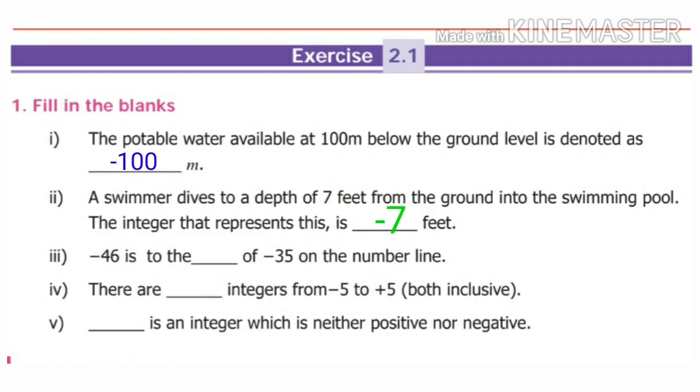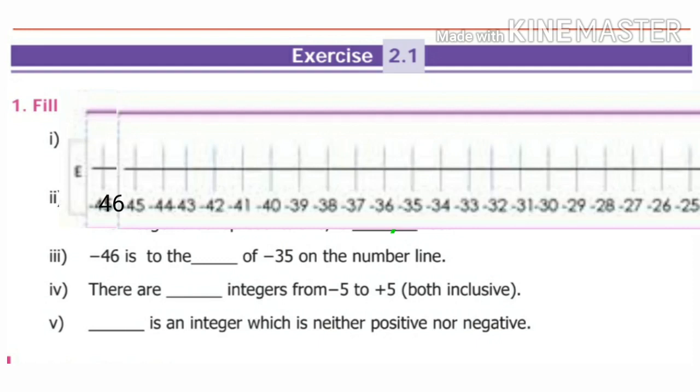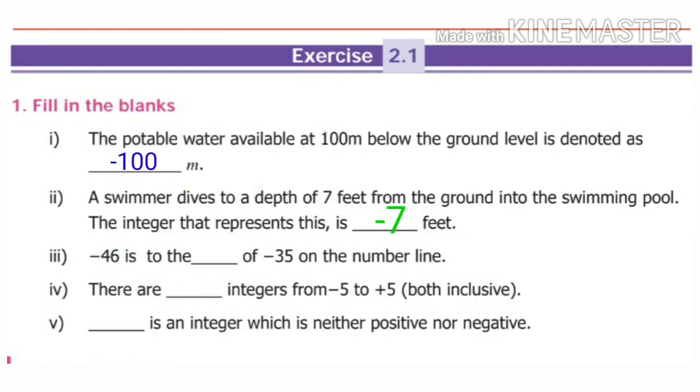Third sum: minus 46 is to the dash of minus 35 on the number line. On the number line, zero's left side has negative numbers. Minus 35, minus 36, and so on to minus 46. So the answer is: minus 46 is to the left of minus 35 on the number line.